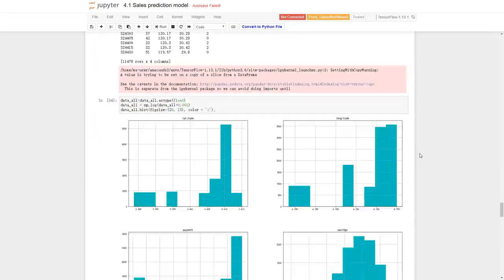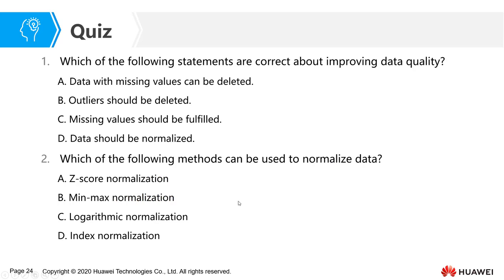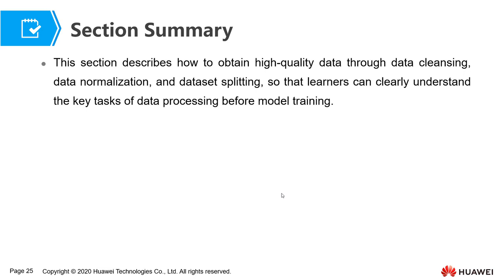That's all for the code in this section. As usual, I'll leave two questions for you to think about. Question 1: To improve data quality, is it correct to delete missing values? No, it is incorrect. The dataset will be incomplete if we directly delete the data with missing values, especially when the dataset is small. Improving data quality means using imputation or normalization. Therefore, the correct options for this question are B, C, and D. Question 2: Which of the following methods can be used to normalize data? Z-score, min-max, and logarithmic are normalization methods, but index normalization is not a data normalization method.